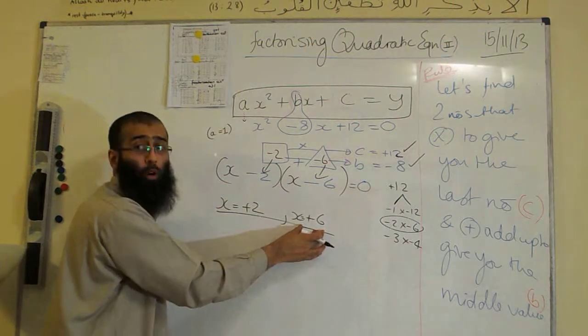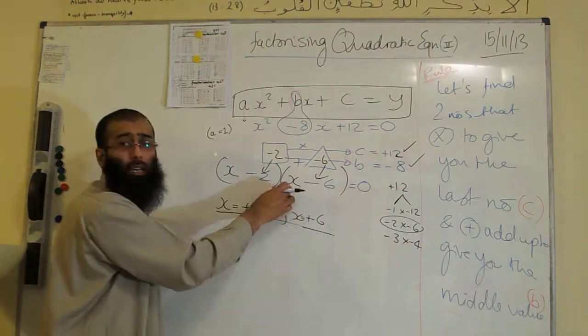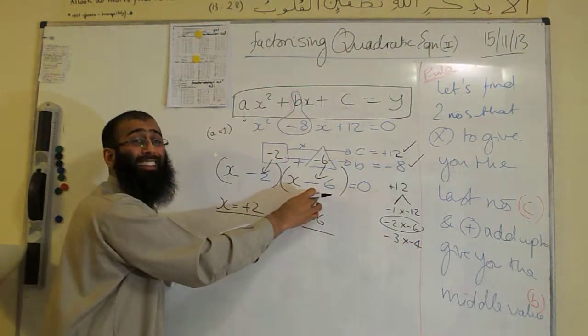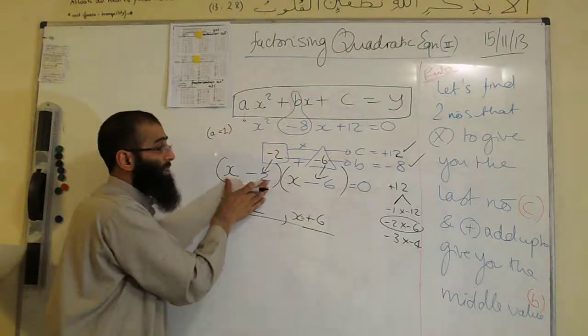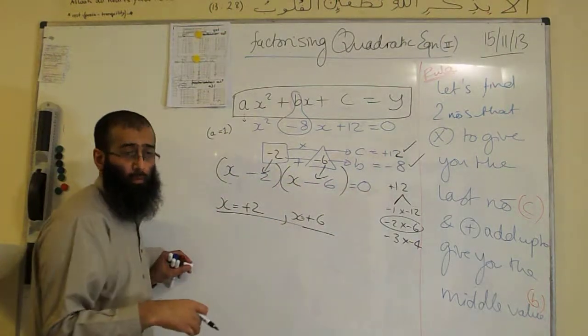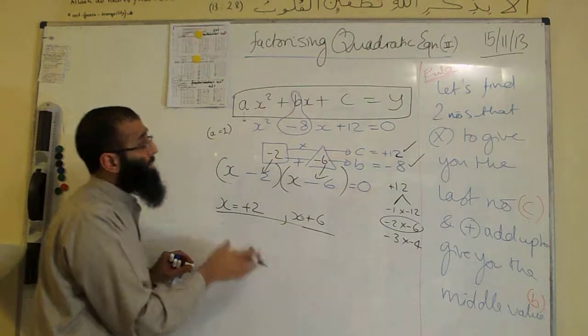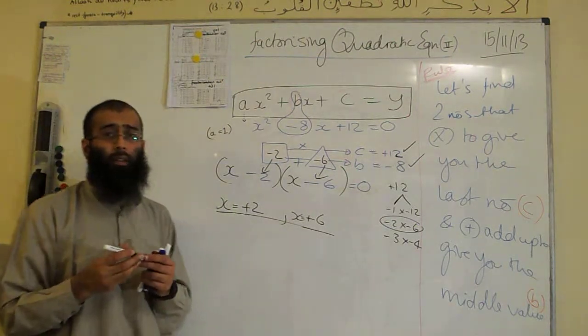Opposite of minus 6 is plus 6. Why? Because when you put plus 6 in here, plus 6 minus 6 is nothing, and nothing times by this value will be nothing. That's all. Okay, happy with that? Right, okay folks, see you back in the next video.